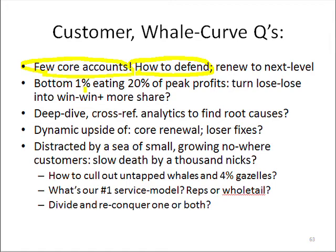At the other extreme, typically about one percent of customers are destroying roughly 20 percent of our internal peak profits. What's interesting about these super-losing customers is they have imposed upon us a dysfunctional way of buying. Often they're hyper-focused on one metric, and it turns out to have a lot of hidden downside costs. So basically it's a lose-lose — we have a very high cost to serve, and they have a very high total procurement cost and large downtime within their business.